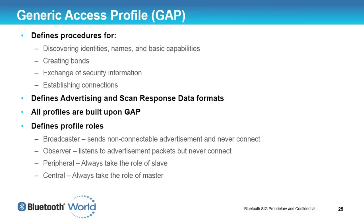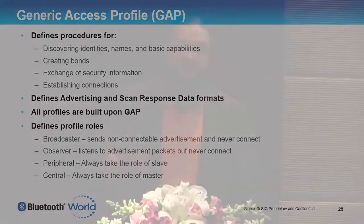All the profiles are built on top of GAP. In low energy, we define four different roles. A broadcaster is a device that broadcasts data — normally non-connectable advertising — and typically never makes a connection at all. An observer allows you to observe broadcasters. Then we have two more familiar roles: peripheral, which is the slave role in terms of the lower layer topology, and central, which is the master role.